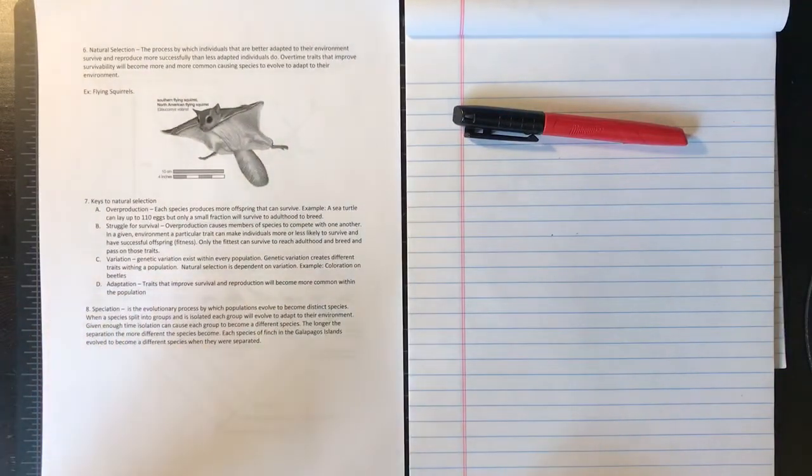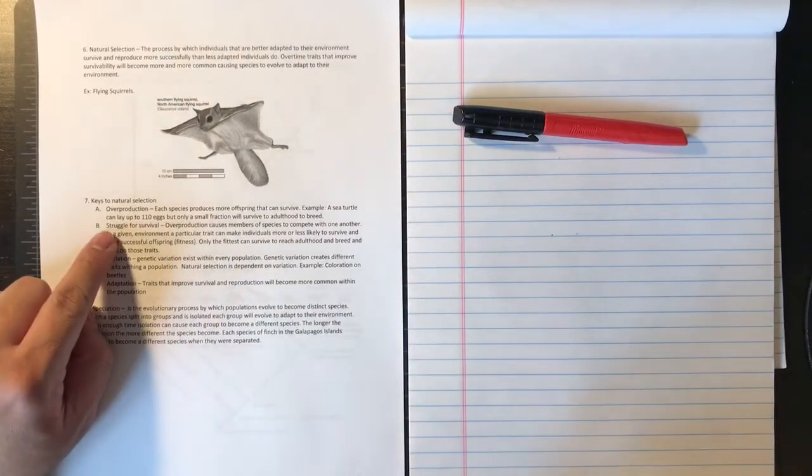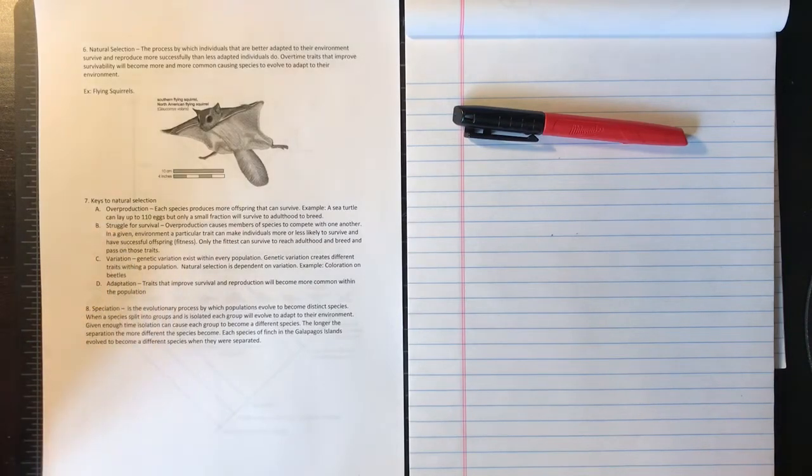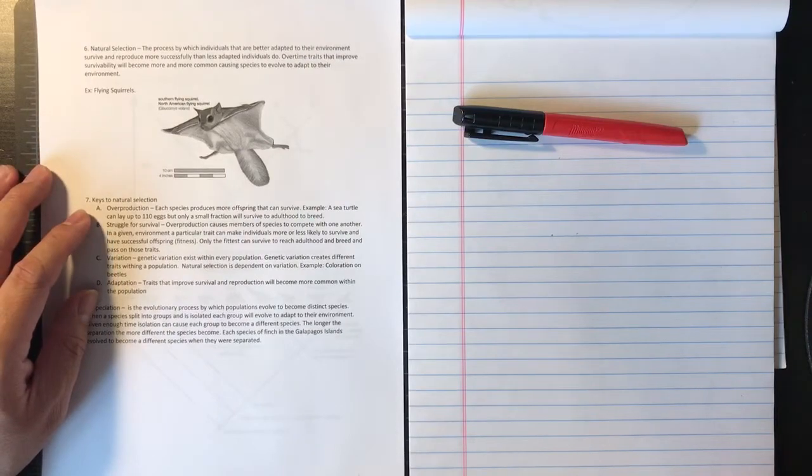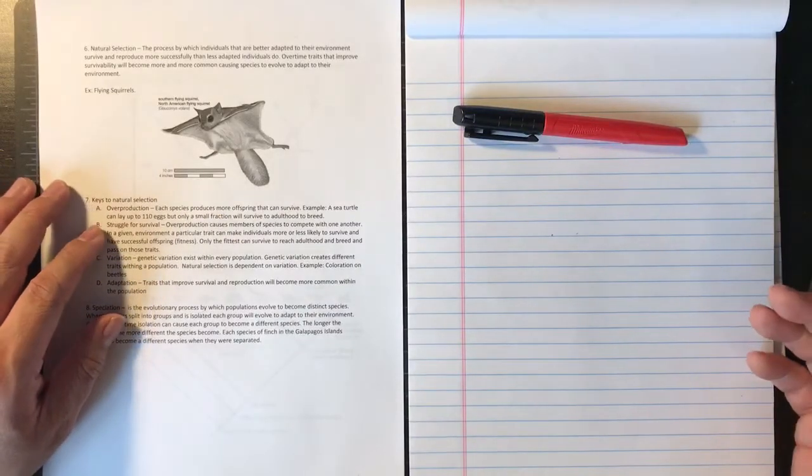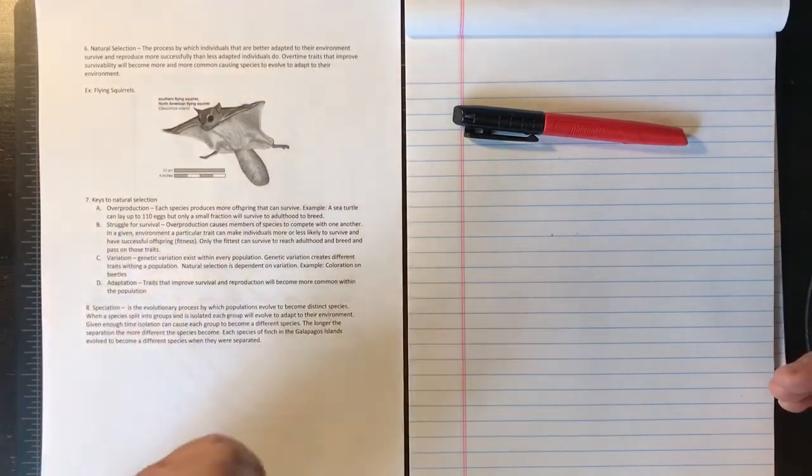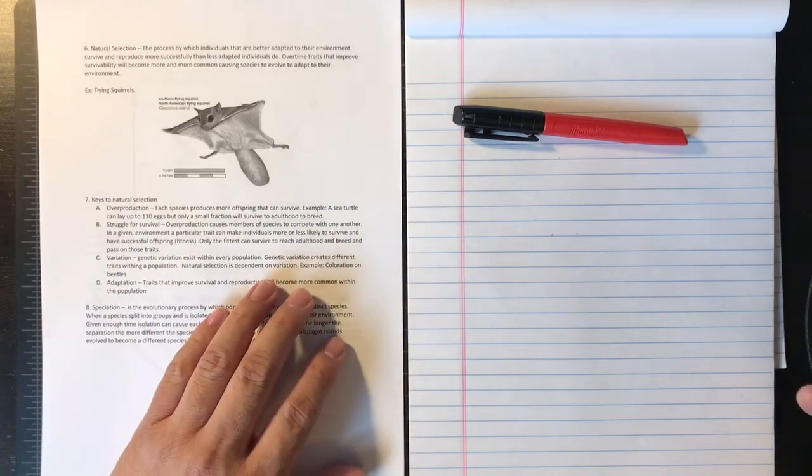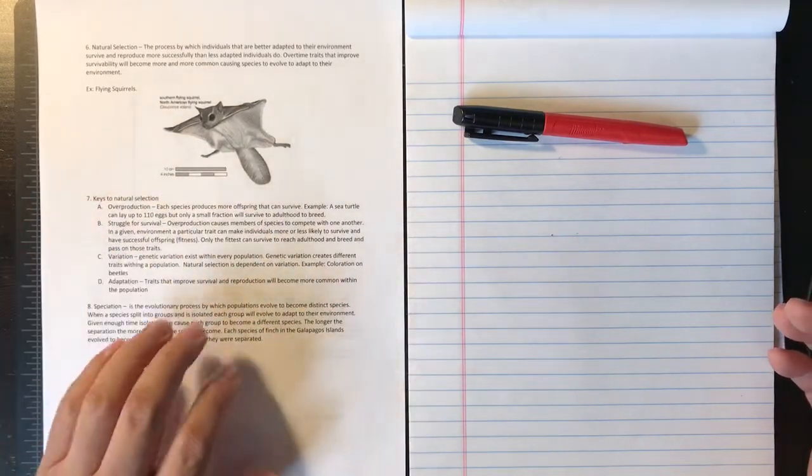So there are keys to natural selection. Overproduction is the first one. A: overproduction means that each species produces more offspring than can survive. For example, a sea turtle will lay up to 110 eggs. But only a small fraction of those eggs that are hatched will survive. Many of them will get eaten by predators. Even if they do make it to the ocean as they're scrambling from the beach, they'll get picked off by fish, birds, you name it. Only a very small amount of them will make it to adulthood to breed.